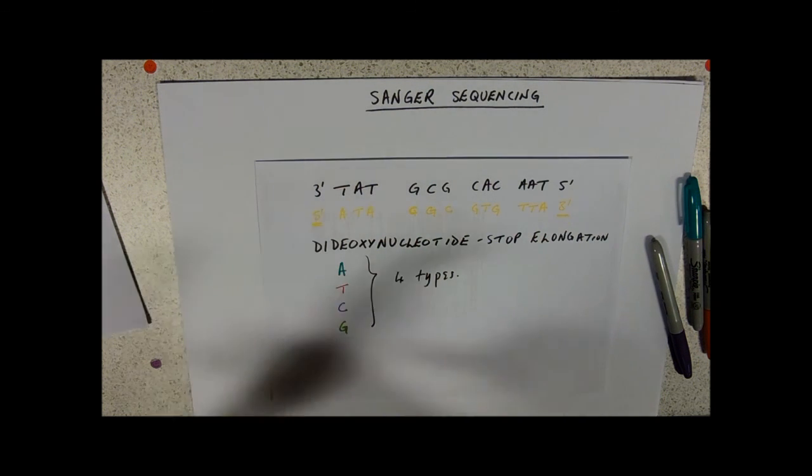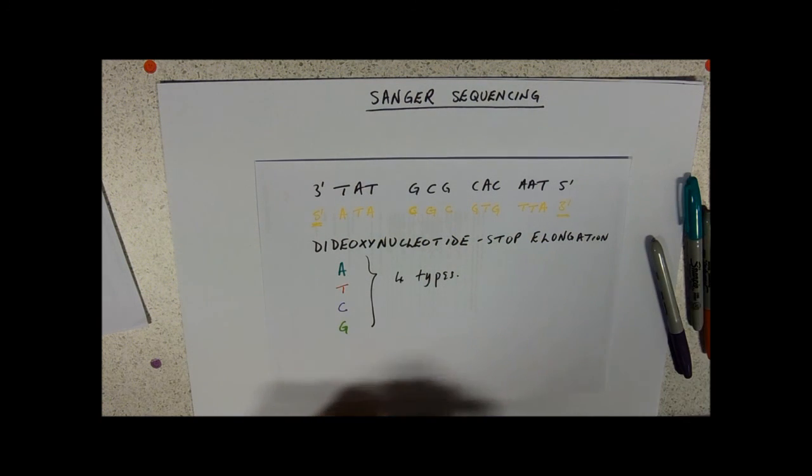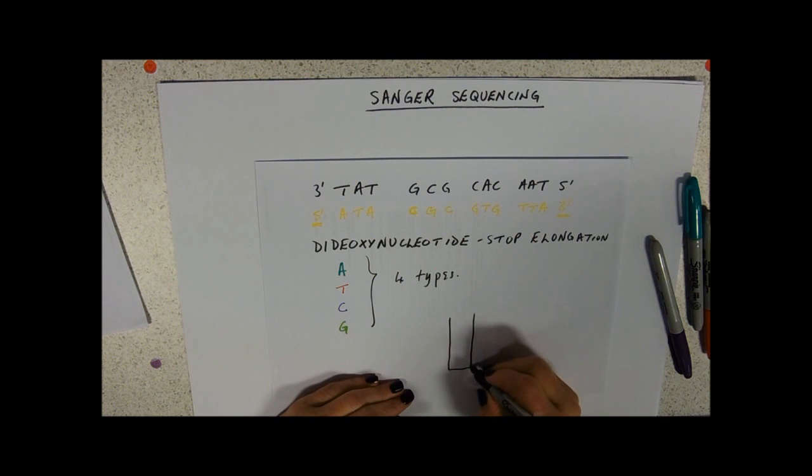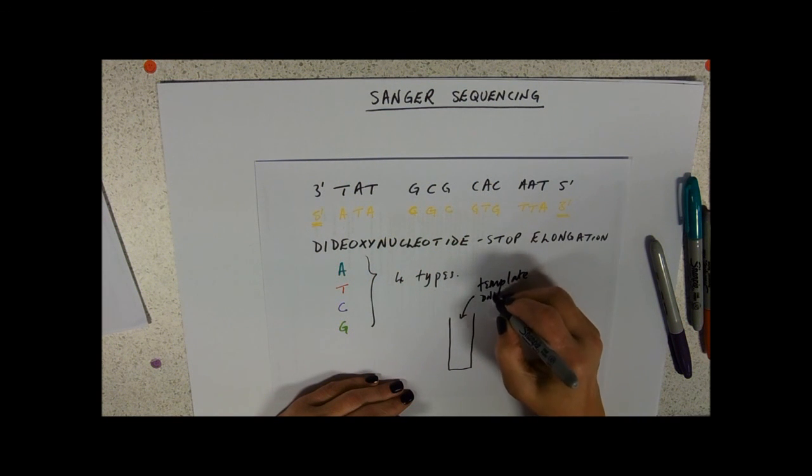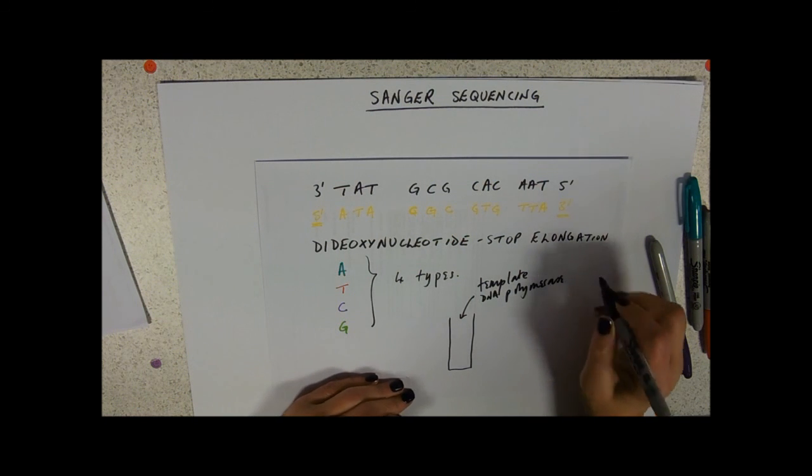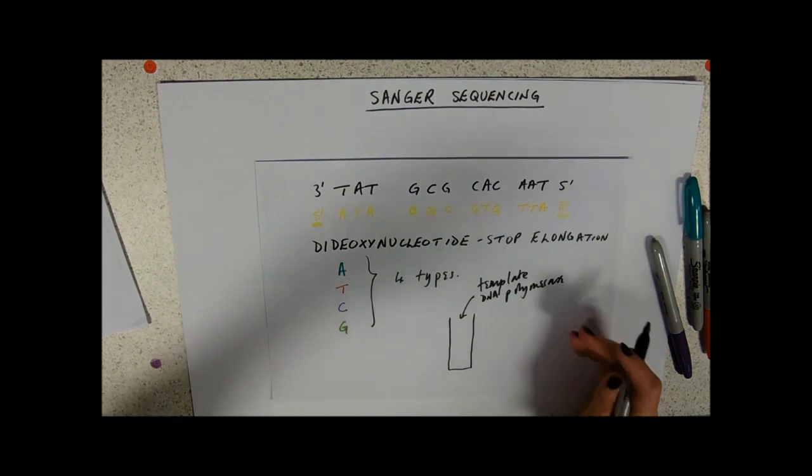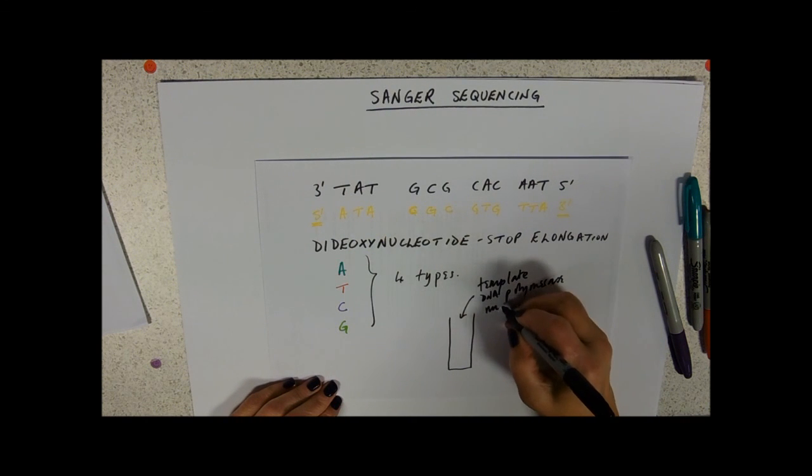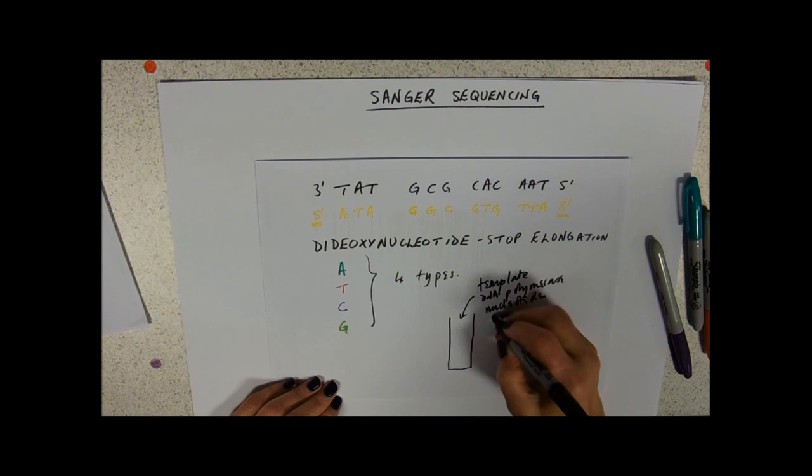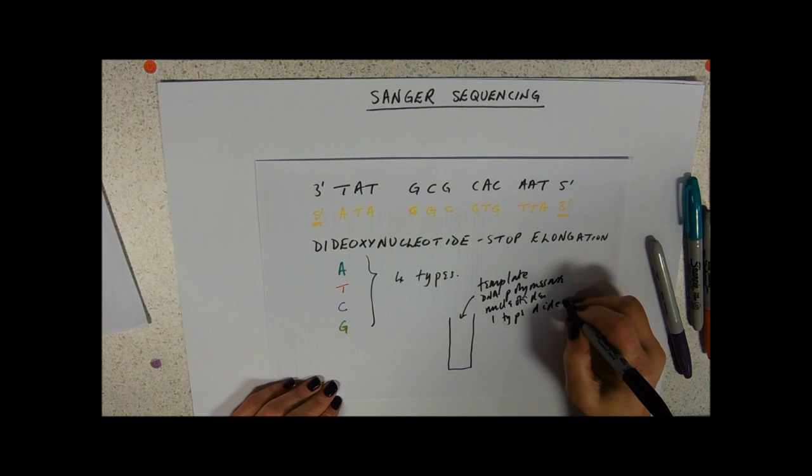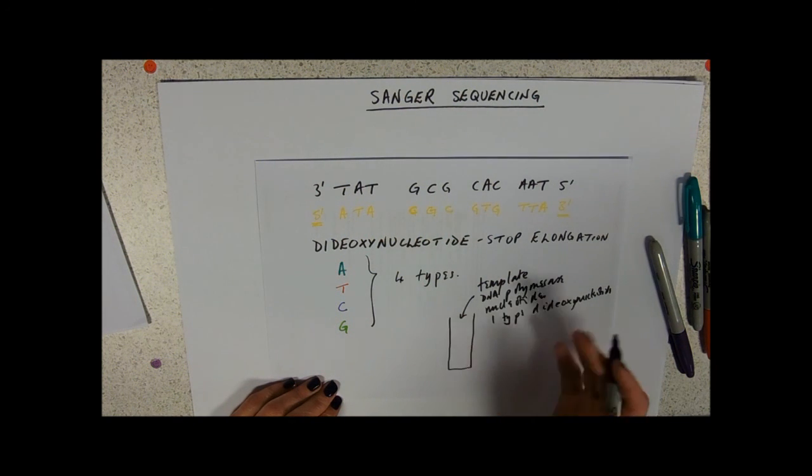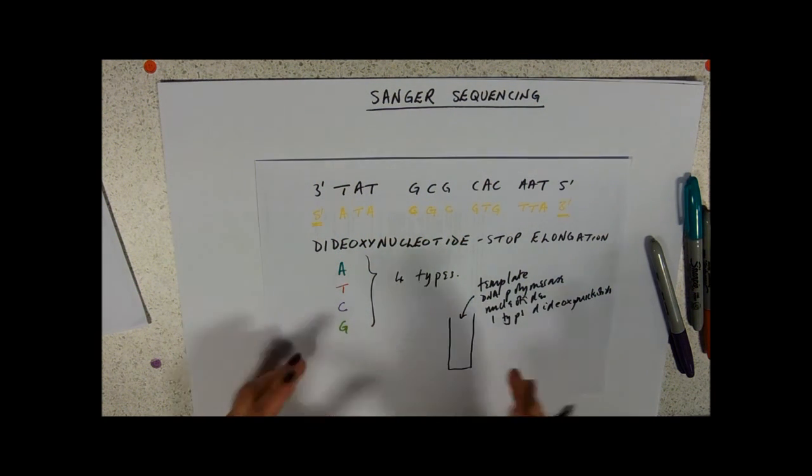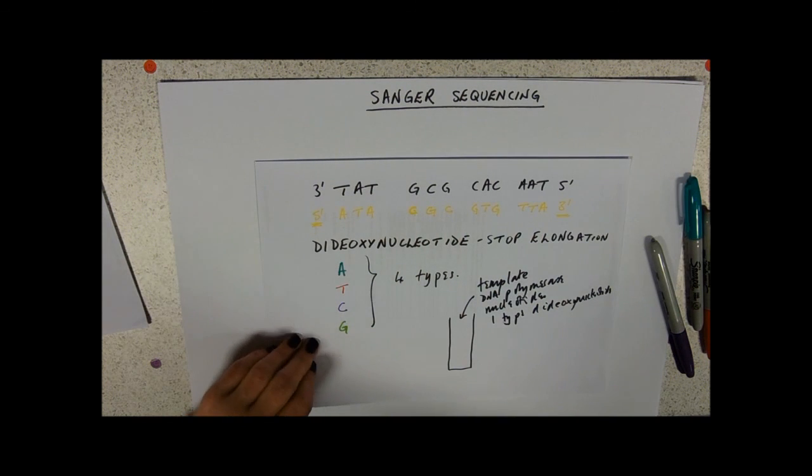So what we're gonna do is we're gonna stick our template strand. So we're gonna need a template, we're gonna need some DNA polymerase. The template strands are quite easy to make, you can just denature, break the hydrogen bonds with heat, some DNA polymerase, some nucleotides, and one type of dideoxynucleotide. And you're gonna need to set up four different tubes, one for A's, one for T's, one for C's, one for G's.